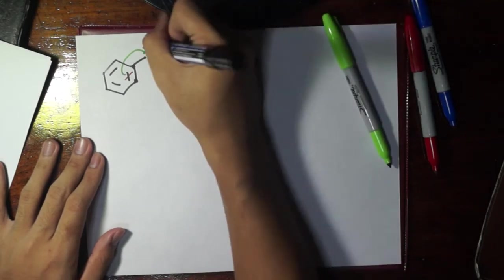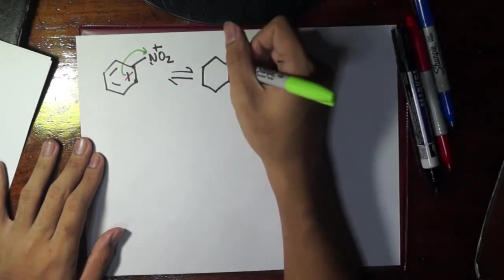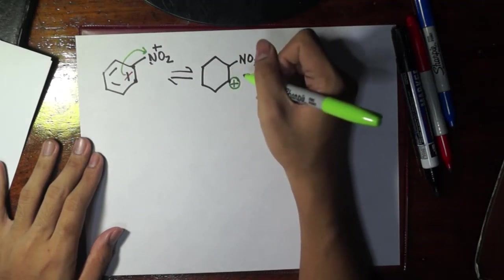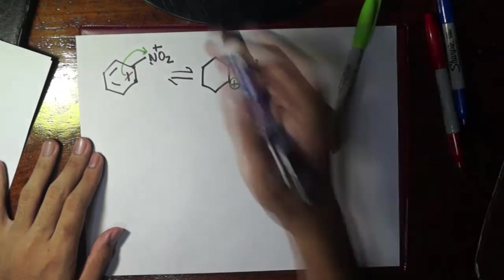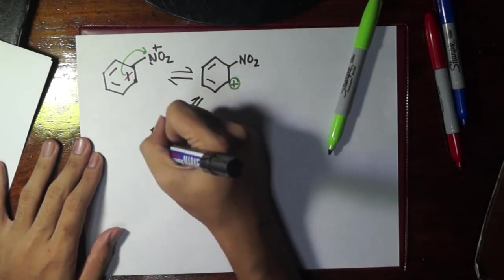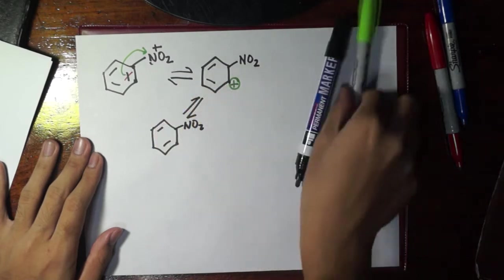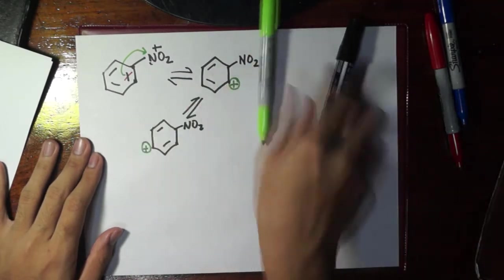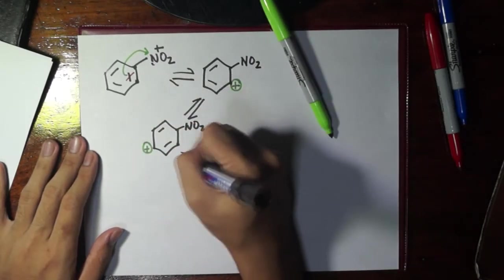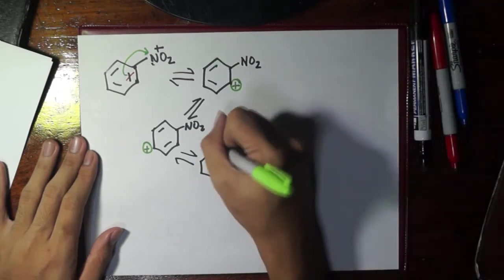But the electrons are gone, so it becomes positive at the ortho portion. And I think we already know the pattern—it will just, the positive charge will just jump to the para position. And then at a certain point it will jump again to the opposite ortho position.